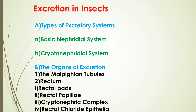The Malpighian tubules contain several enzymes, including alkaline phosphatase, acid phosphatase, lipase, and succinic dehydrogenase, as well as some water-soluble vitamins such as riboflavin, thiamine, niacin, pantothenic acid, and ascorbic acid. This concludes the discussion of the organ of excretion related to the Malpighian tubules, which act as the primary excretory organs in most insects.